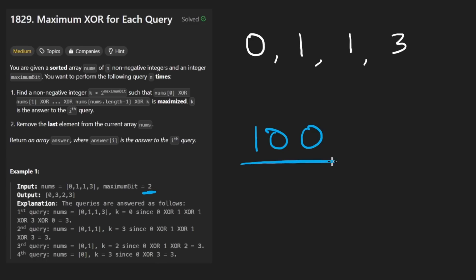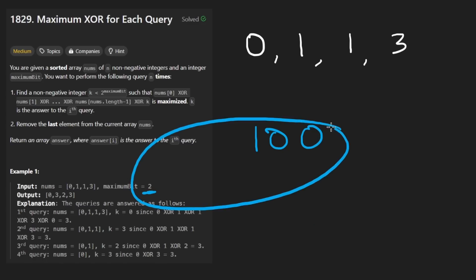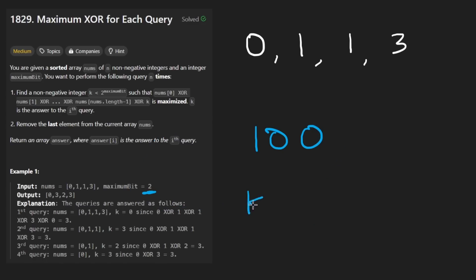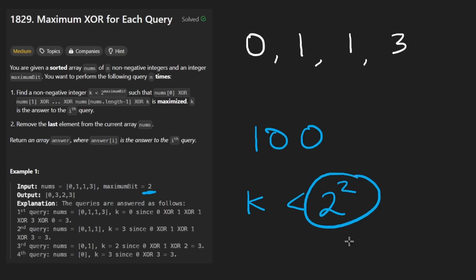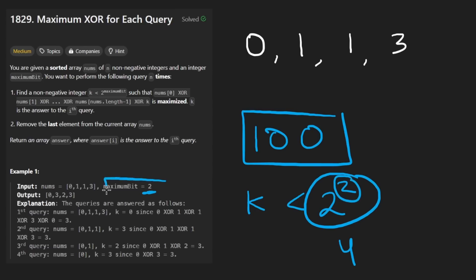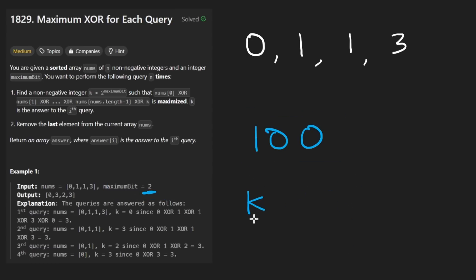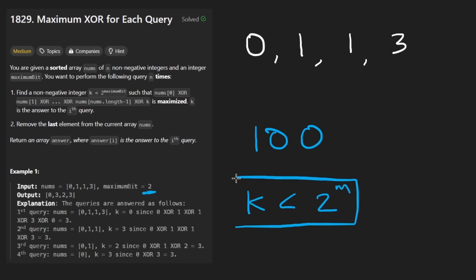There is an integer K. We're going to talk about what it represents, but it has to be less than two to the power of maximumBit, which is two. Two to the power of two is four, which is why that exponent — the maxBit — represents that position. K must be strictly less than two to the power of M, so the maximum value K could be is three.